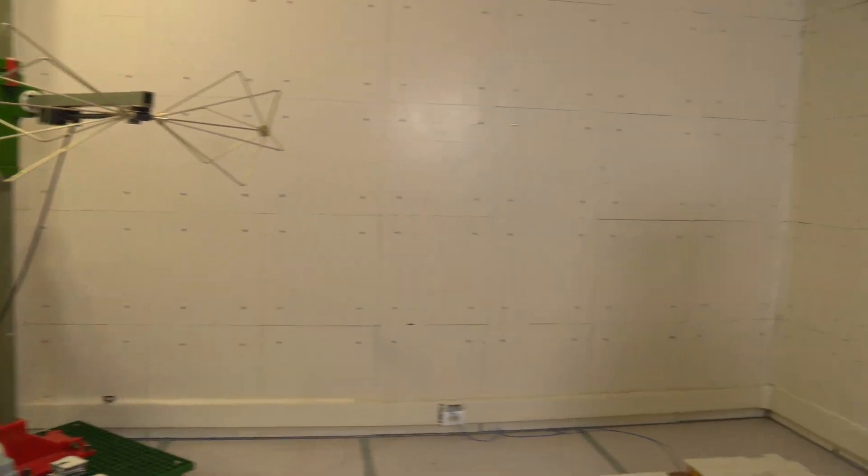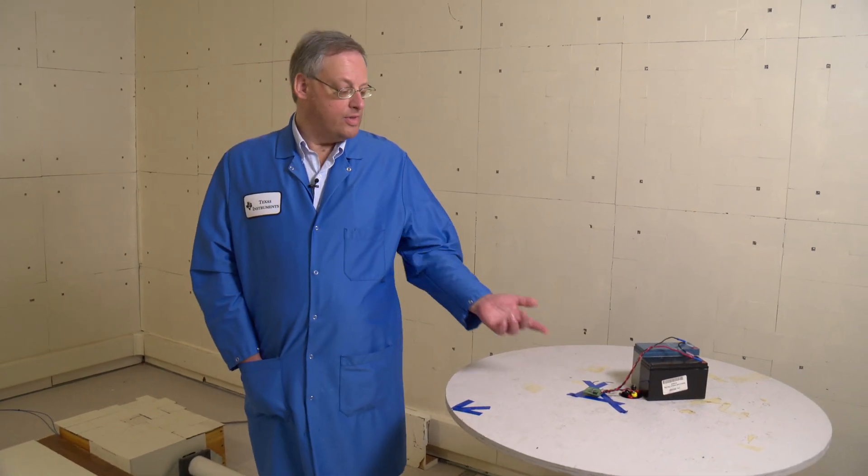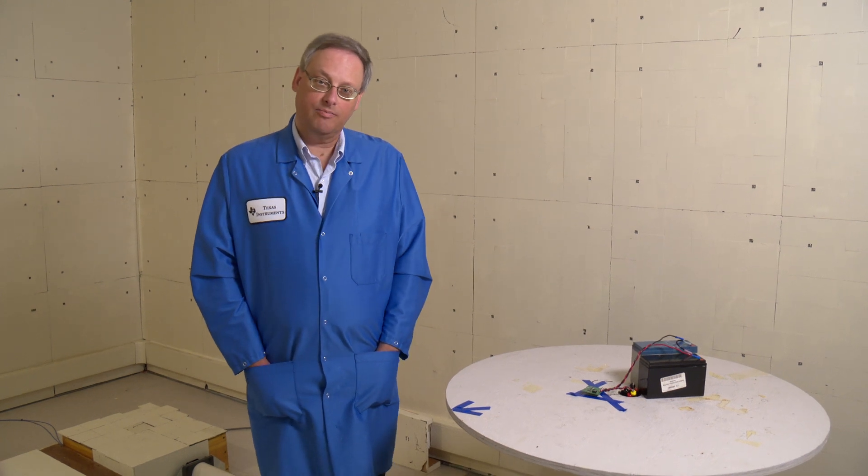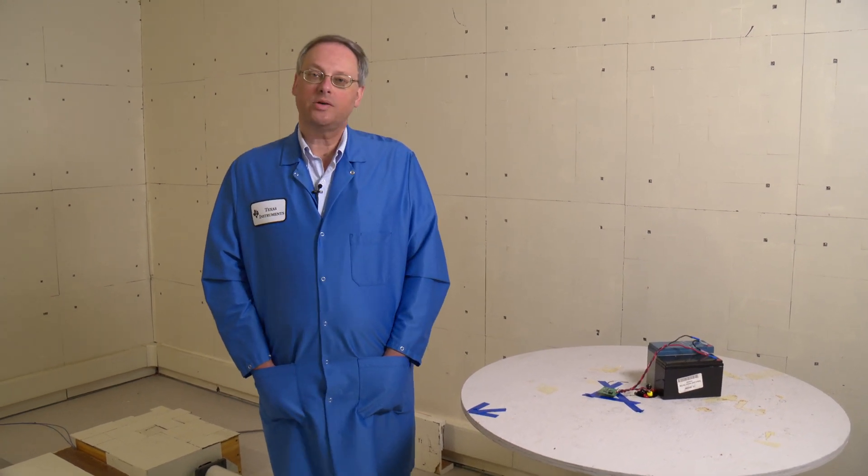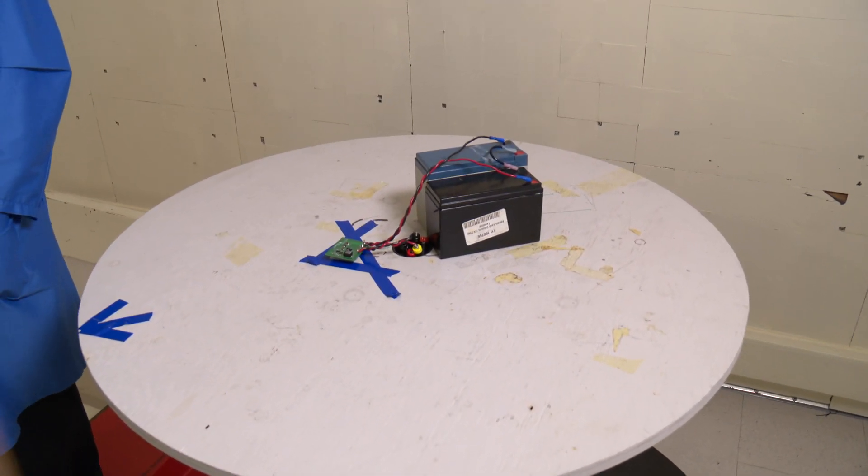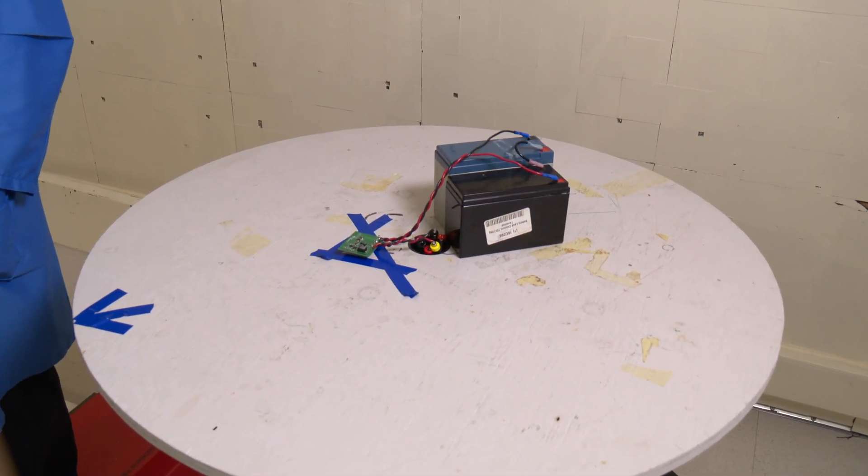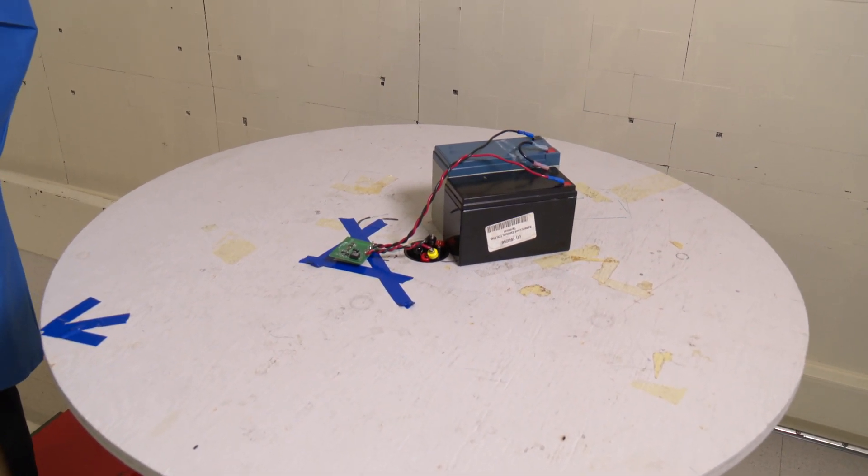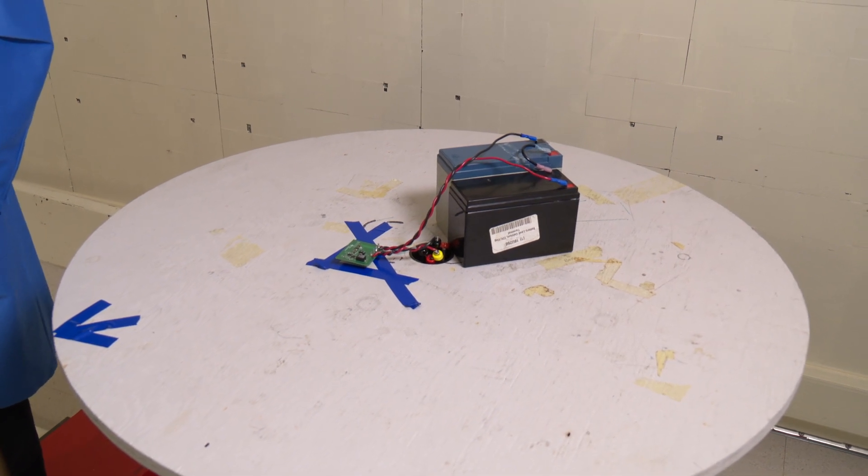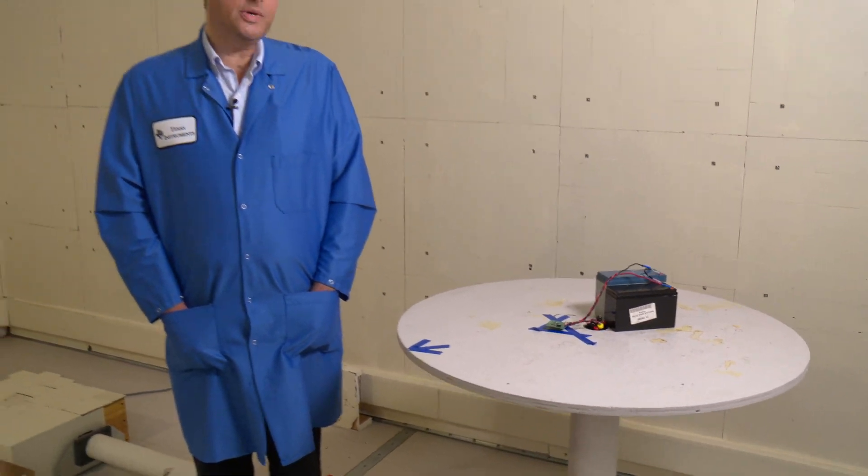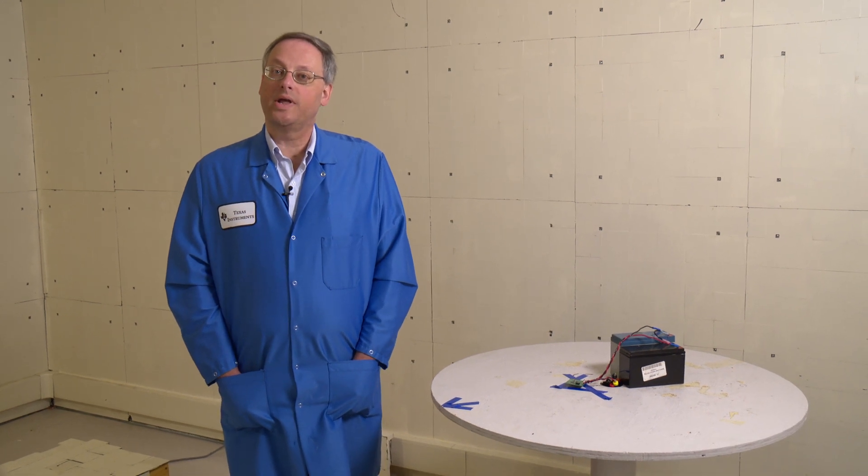So here we are inside of our EMI chamber, and we have the PC board we saw earlier set up and ready to go to run an EMI scan. The input power supply to our PC board is a pair of 12-volt batteries in series that gives us 24 volts for our input supply. And it's very important to use batteries whenever you're doing any kind of EMI testing, because they provide a very low noise source for our regulator.